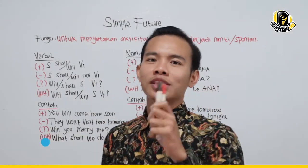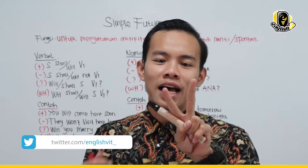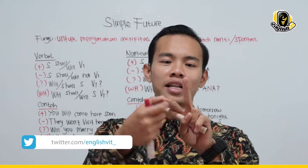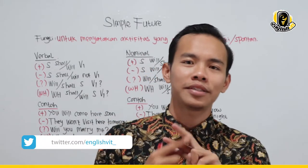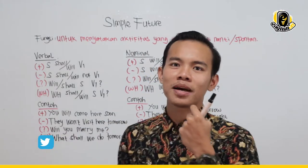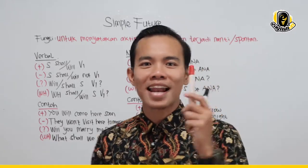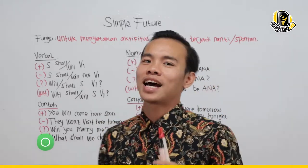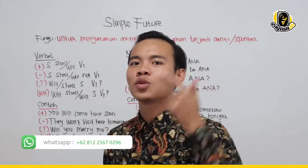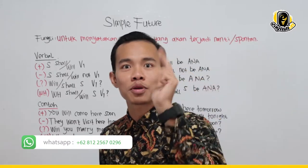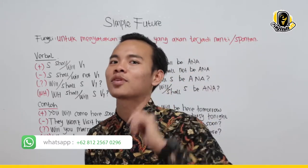Untuk simple future sendiri ada dua caranya, yaitu verbal sama nominal. Saya ingatkan kembali — verbal adalah kalimat yang di dalamnya ada kata kerja, aktivitas. Contoh: mandi, minum, tidur, main bola, dan sebagainya.